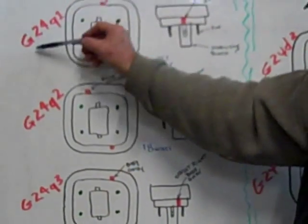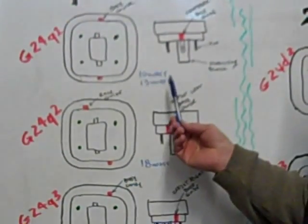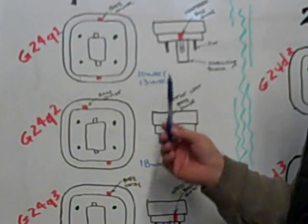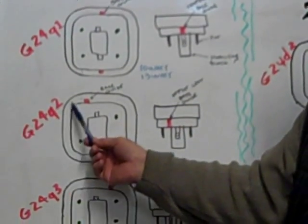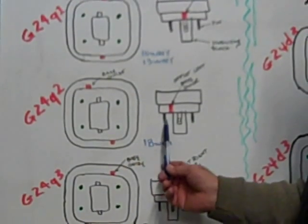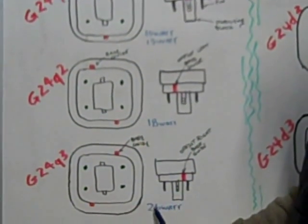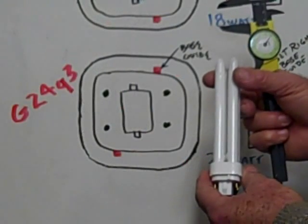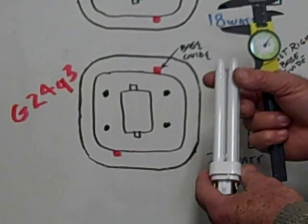Now the G24Q1 is commonly used with the 10 watt and the 13 watt. The Q2 is an 18 watt and the Q3 is a 26 watt. This is an example of a G24Q3